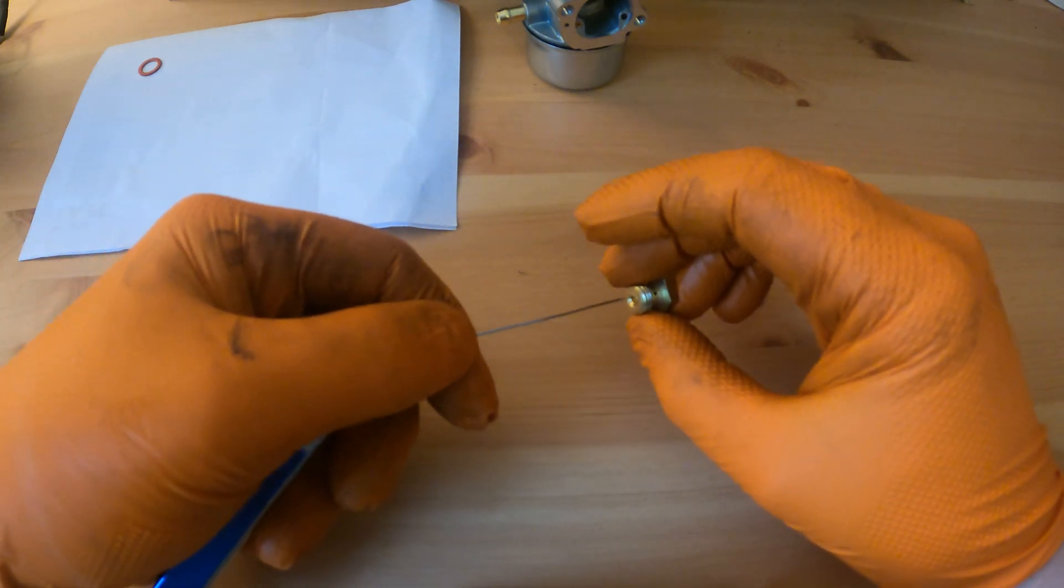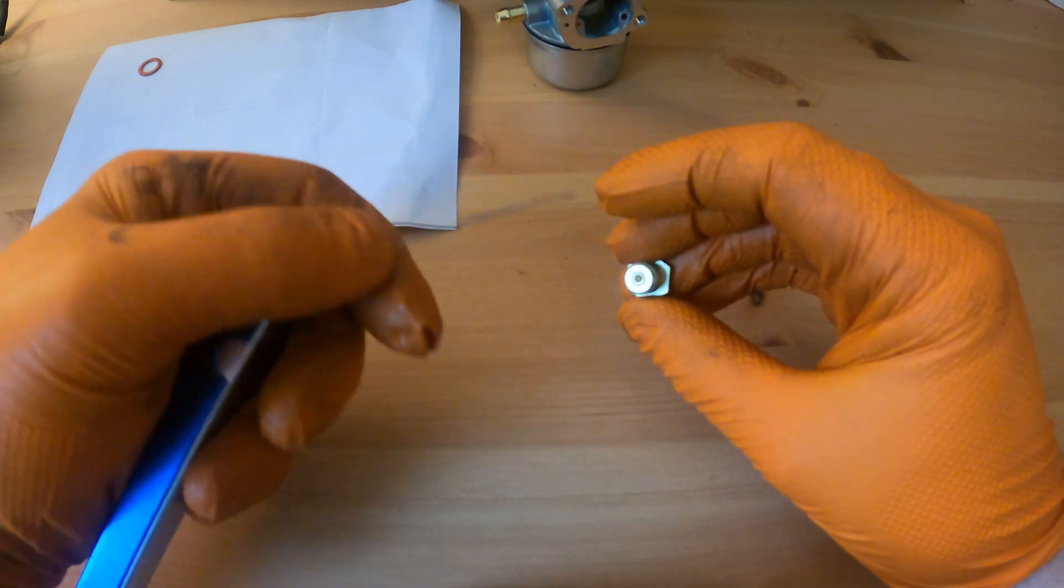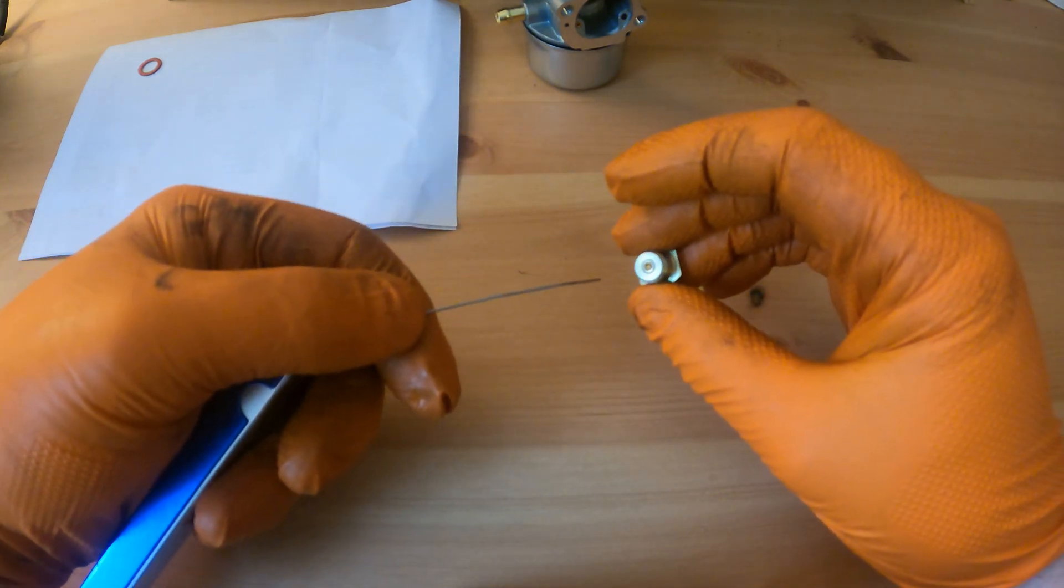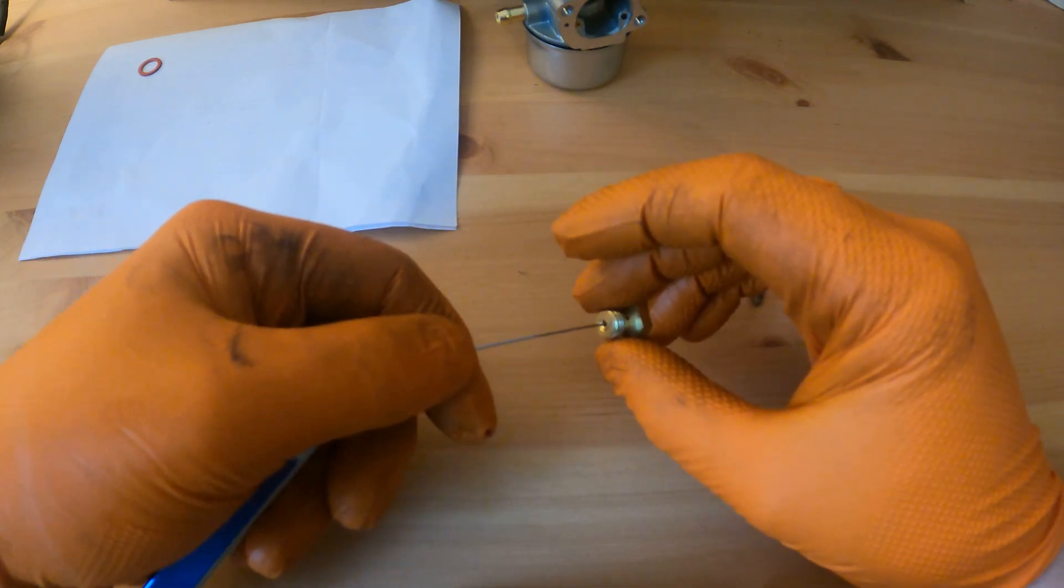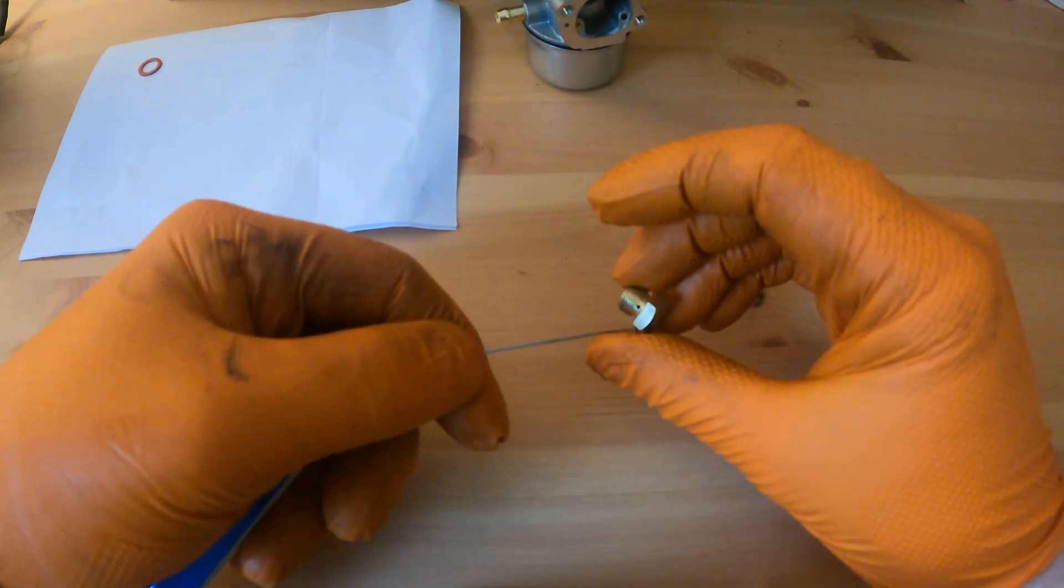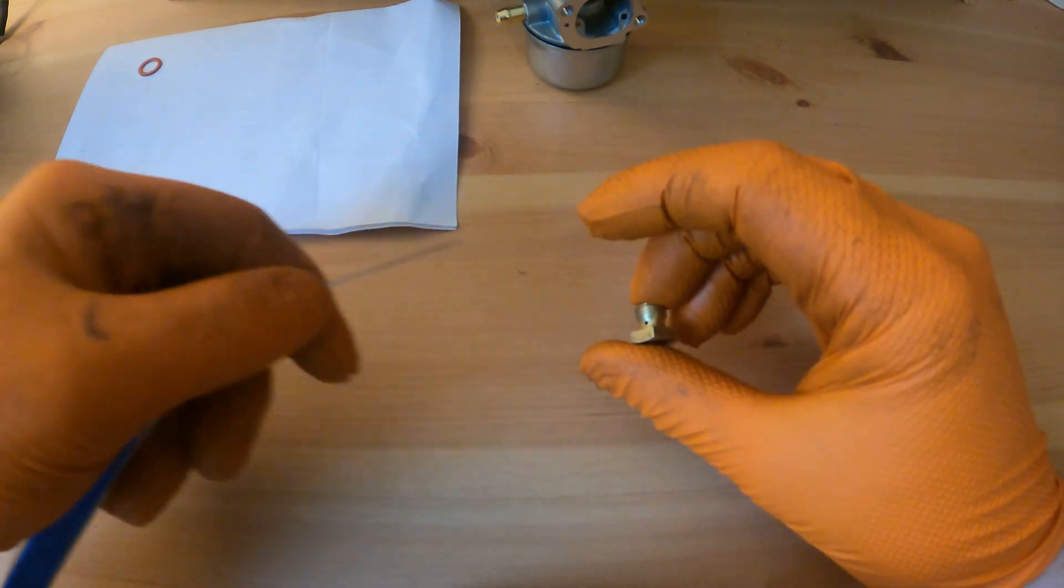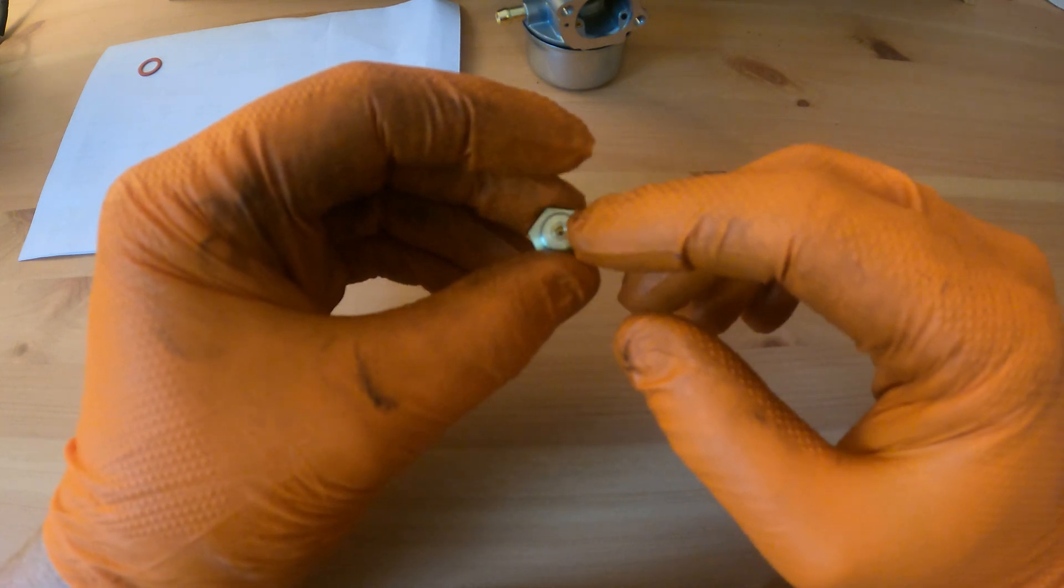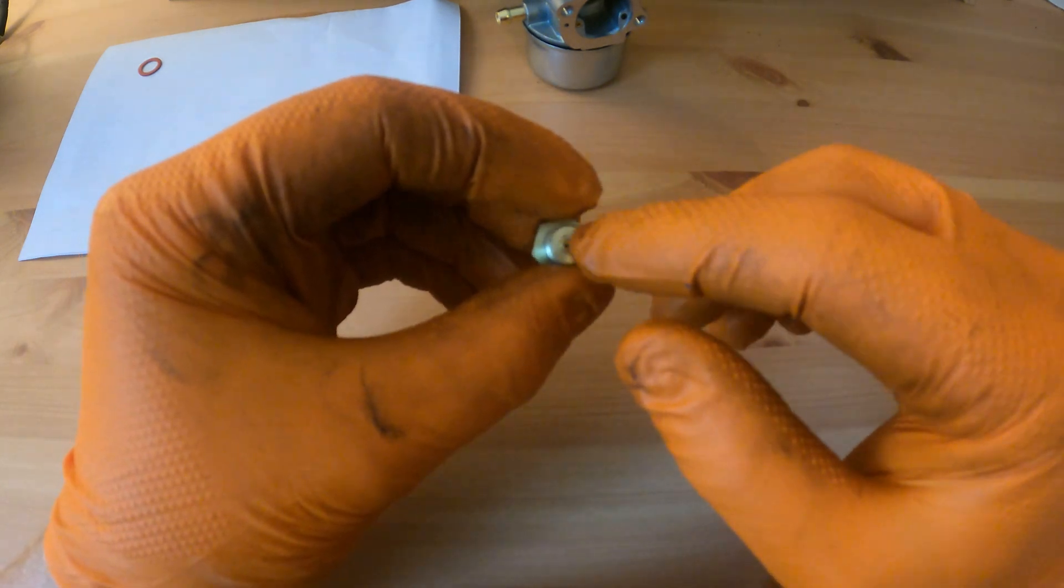Just rod them through ever so lightly and then give it a blast with some carb cleaner. You should be able to see all the way through. You could put your mouth on there and blow through, and if you can blow through it, it's pretty much clean.